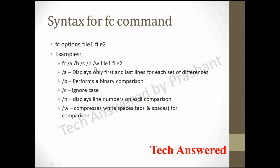If we use fc with option A, it will display only the first and last lines for each set of differences. Option B will do a binary comparison. Option C will ignore case. Option N will display line numbers — for example, if there is a difference at line number 35 in file1 and file2, it will display the line number where the difference exists. W is for compressing white space during comparison. We are mostly going to use A, B, N, and C along with file1 and file2.